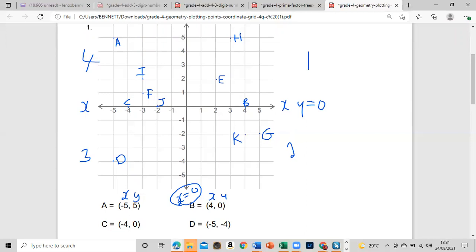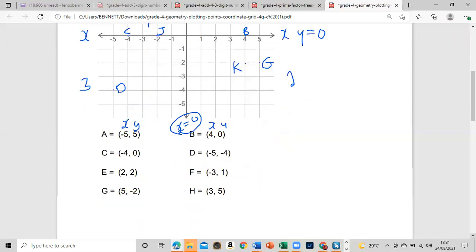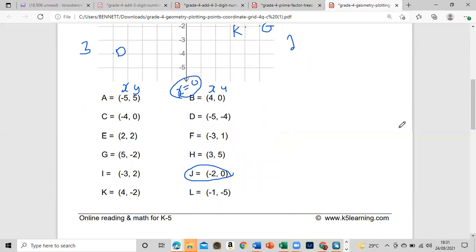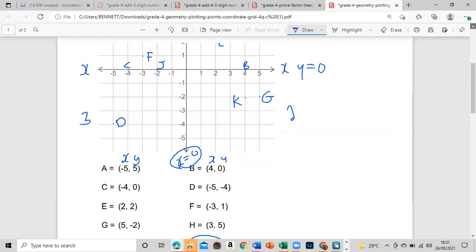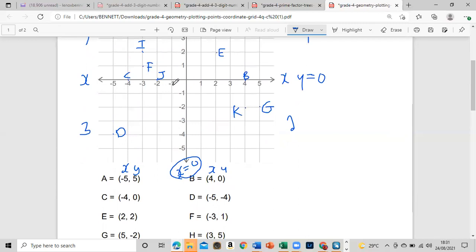And then the last one, L: negative one and negative five. Negative one and negative five, that is L for Lennox channel.